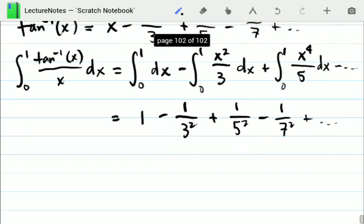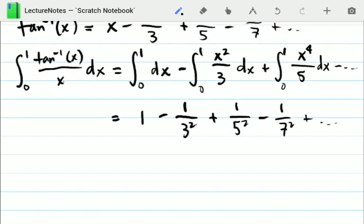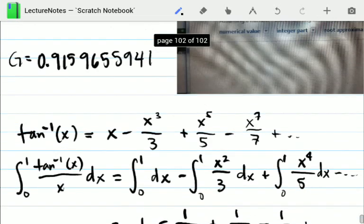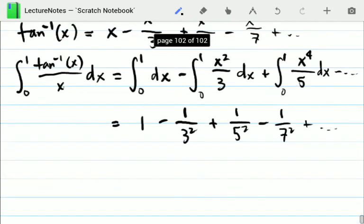You get the pattern. So in fact, this series here, if you evaluate it numerically, it actually gives you exactly this number: 0.915965941, which is Catalan's constant.